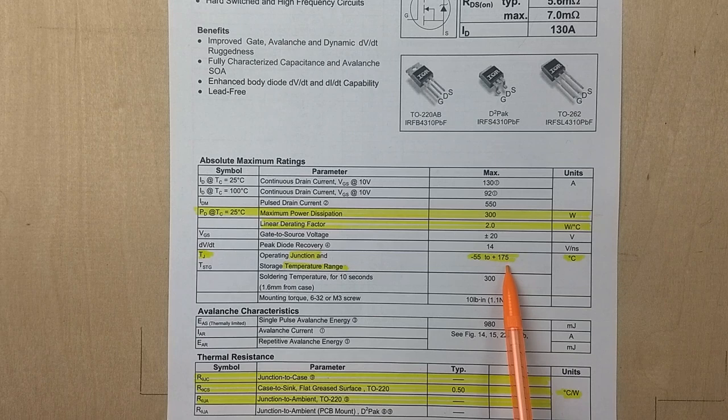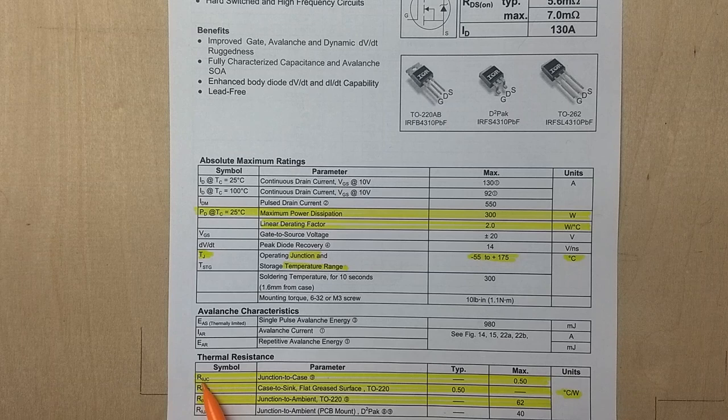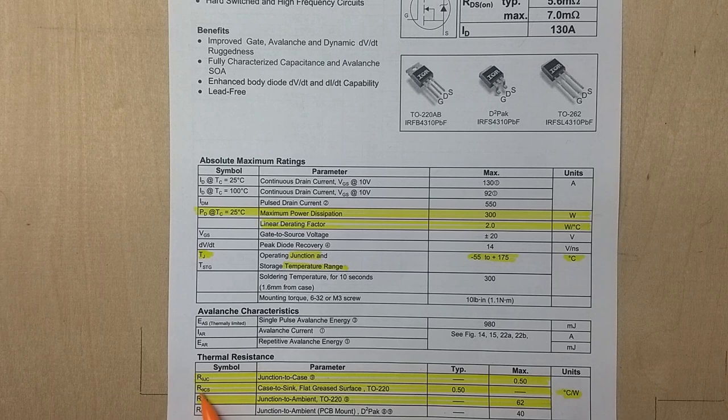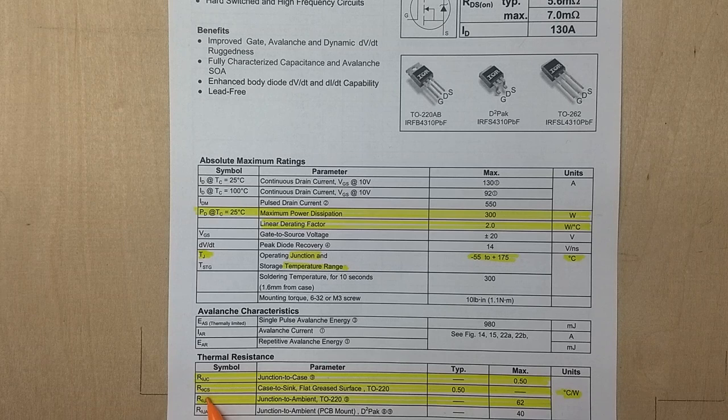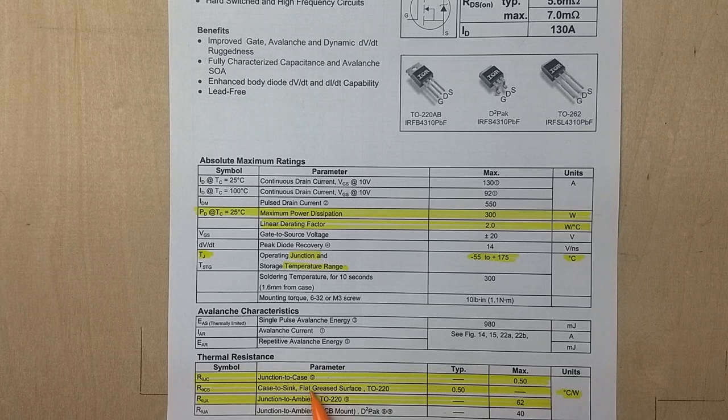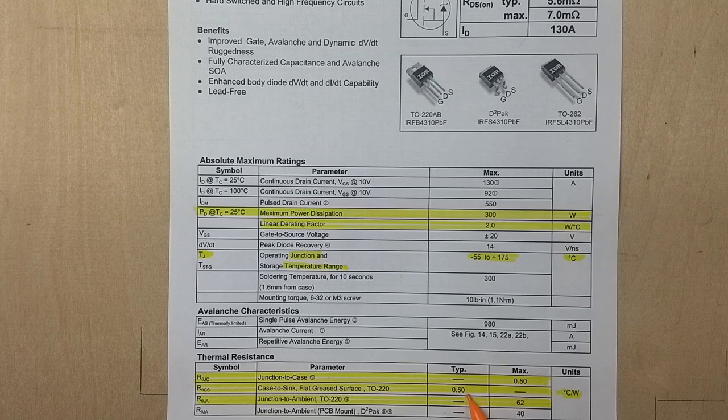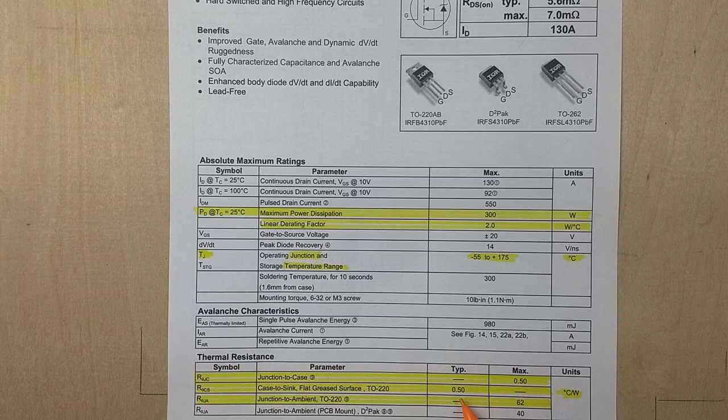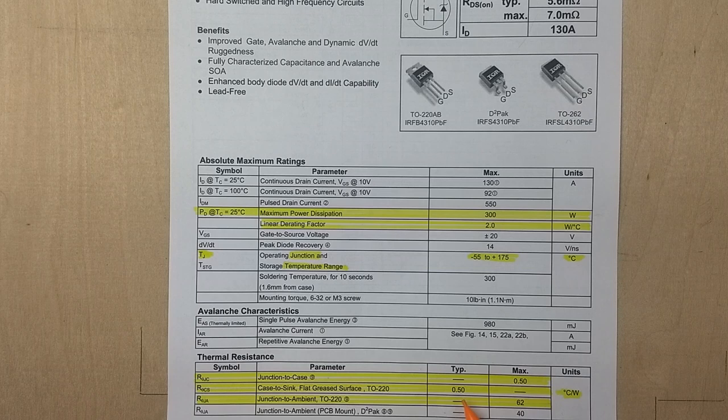Then down here they're telling us the thermal resistance junction to case is 0.5 degrees C per watt. And this is a very important parameter, this next one. The thermal resistance case to heat sink, and let's assume it's smooth, flat, and greased, is also 0.5 degrees C per watt. And this is going to turn out to be a very important factor when we look at heat sink sizing.